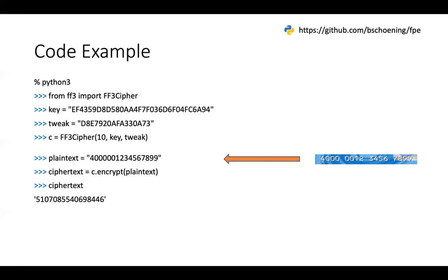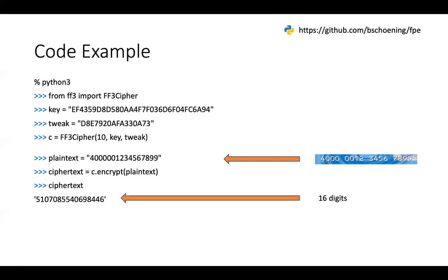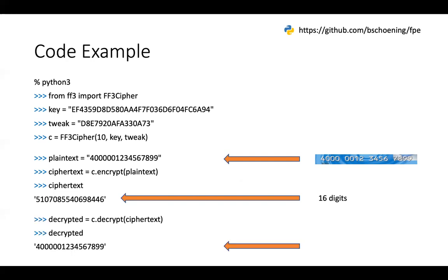This is an actual Python example, not a live demo yet — I'll show that at the end. But you can download the code, use pip install, and run it in Python. If you use the same keys and tweaks — not just my library, but any library — set the radix to 10 and you'll get the same output. So 16 digits in, 16 digits out. And if you decrypt it, you of course get the original value back.